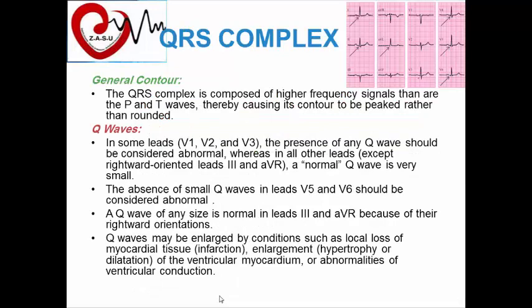QRS morphology: we will also discuss general contour, voltage or amplitude, and axis of the QRS. Unlike the P wave which is rounded, the QRS complex is composed of higher-frequency signals, so it is peaked rather than rounded. From its name, the QRS complex is composed of Q wave, R wave, and S wave, which we will discuss separately.